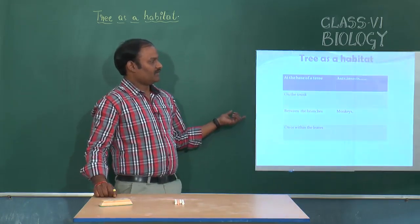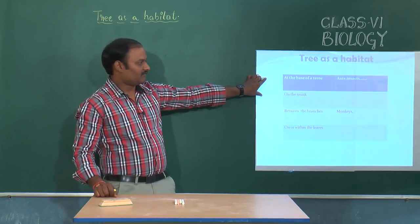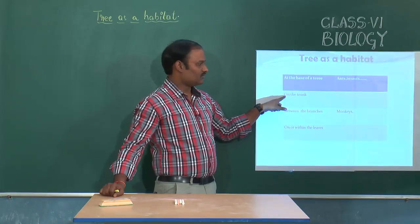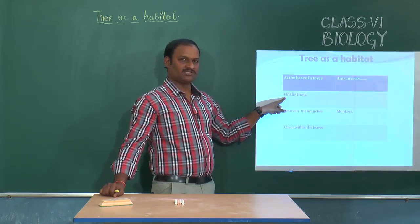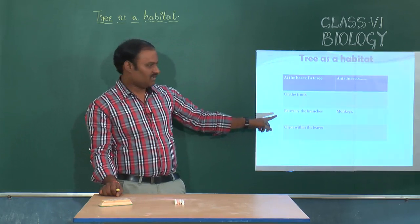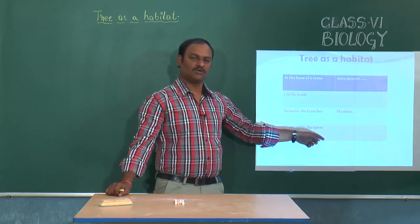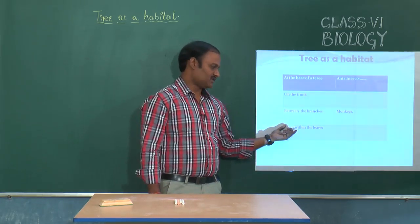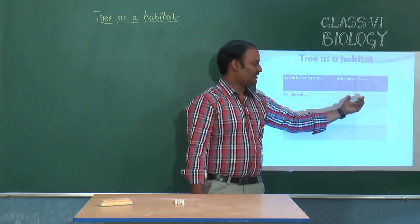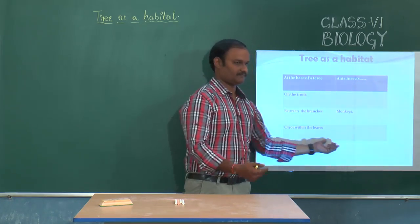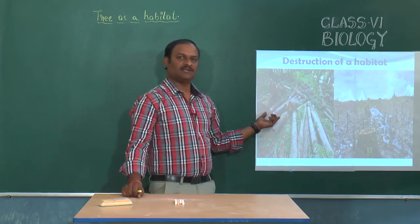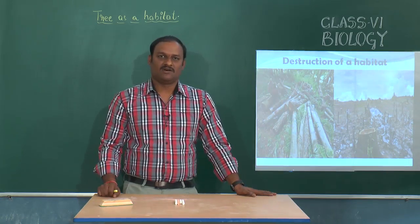We can classify organisms by their location on the tree — for example, which organisms are present on the trunk, between the branches, on or within the leaves. Trees are the major habitats of different types of living organisms on the earth.